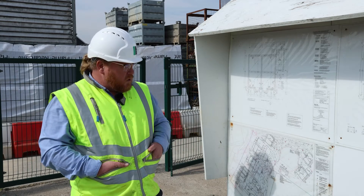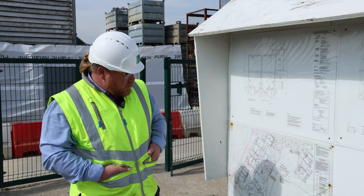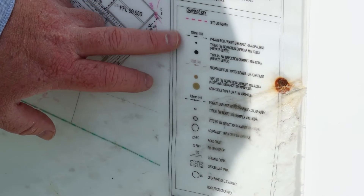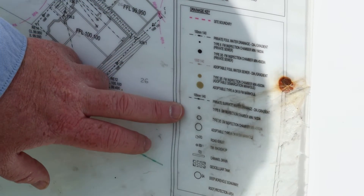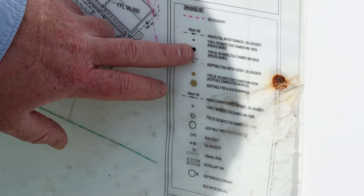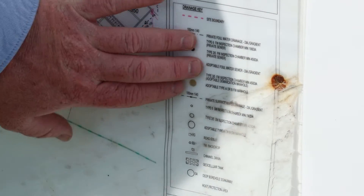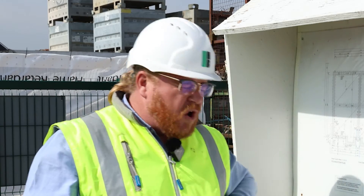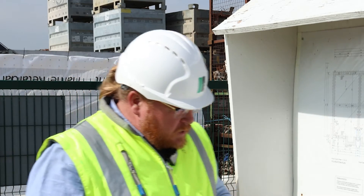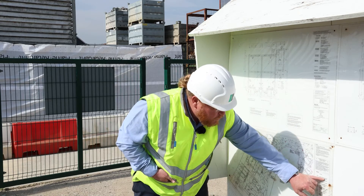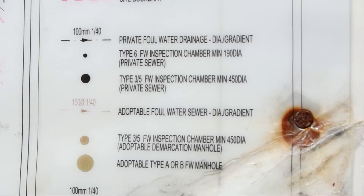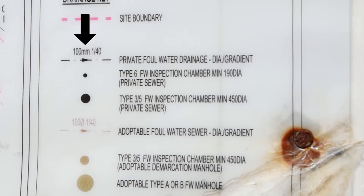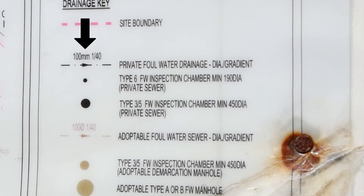When I'm looking at the drawing to do the take-off list, first of all I am looking at the key on the right-hand side. What that will do is it will tell me about private drainage and it will tell me about the adopted stuff. For the purposes of this we're going to talk about internal plot drainage — that there is private foul water drainage, and that gives me the diameter of pipe and then it gives me the gradient of pipe as well.